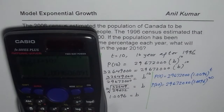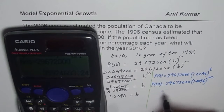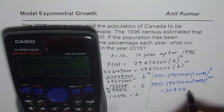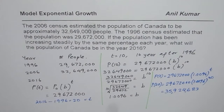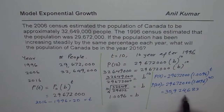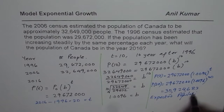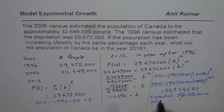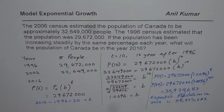I already have 1.0096 in the calculator. I do exponent of 20, then multiply by 29,672,000. We get a value of 35,924,683. So the expected population in 2016 is approximately 35,924,683, which rounds to 36 million. That is how you can estimate population using exponential growth. I hope that helps. Thank you.